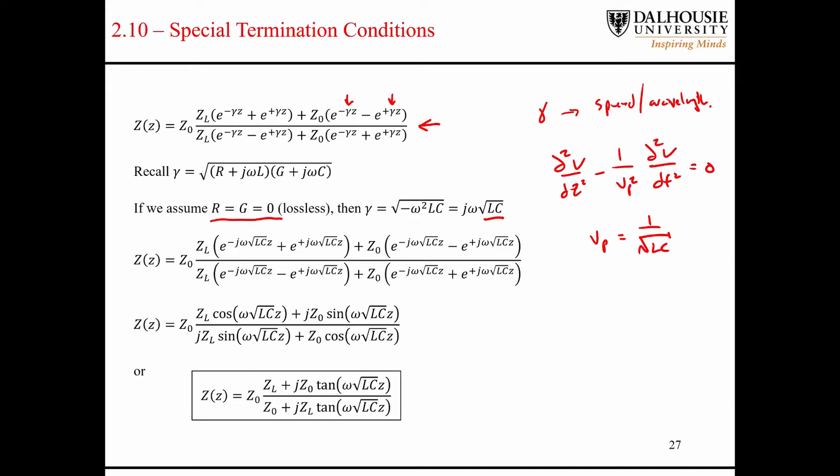We said that the phase velocity was equal to one over the square root of LC, and that's where it shows up. Therefore, we see that the propagation constant is going to equal j omega, so I'll write it as 2 pi f over the propagation constant. So this is important. It shows up quite a bit.